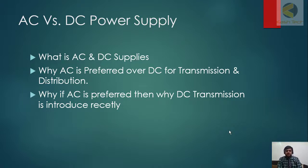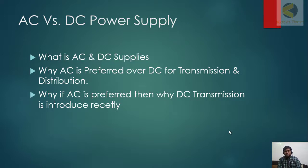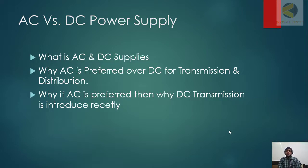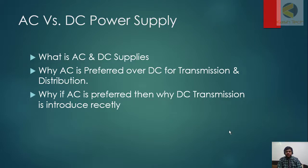Have you ever thought about why AC transmission is used — why AC power supply is used for transmission and distribution — and DC is not used? There are some reasons behind this: it is easy in generation, AC can be stepped up and then stepped down again for distribution.